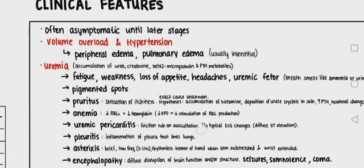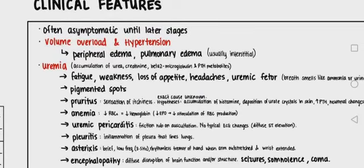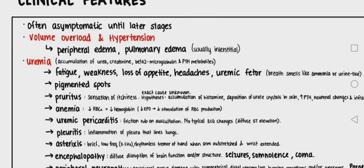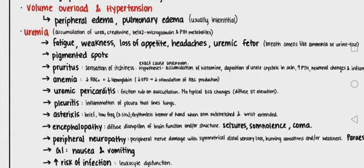The clinical features of CKD include that it is often asymptomatic until the later stages. It includes volume overload, hypertension, peripheral edema, pulmonary edema, and uremia — the accumulation of urea and creatinine — as well as fatigue, weakness, loss of appetite, headache, uremic fetor, pigmented spots, and pruritus.